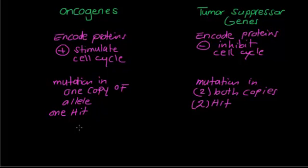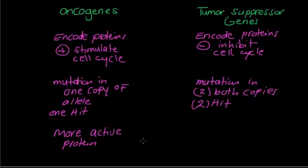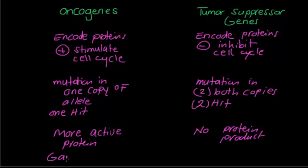Now, what are the protein products? In the case of oncogenes — which require a mutation in one copy of the allele — the product will be a more active protein. We call this gain of function. On the other hand, for tumor suppressor genes — mutation in both copies — there will be no protein product. We call this loss of function.